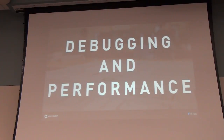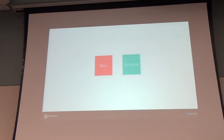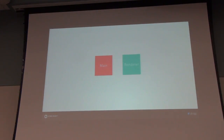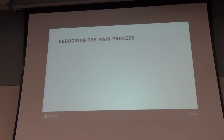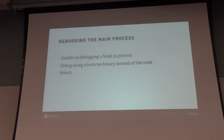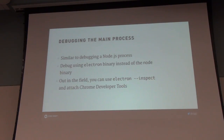There are a couple interesting lessons around debugging and performance. We have two processes to deal with, and you debug them in completely different ways. The main process is a regular Node program, so our IDE — we use IntelliJ, a JetBrains product — already knows how to debug a Node.js process; we just tell it to use Electron instead of node as the binary. We ran into a situation where a system in the field was exhibiting strange behavior, and it turns out you can run the program with a special --inspect flag, give Chrome a URL, and it will attach to your Electron process and let you debug it — incredibly handy without installing an IDE on their machine.